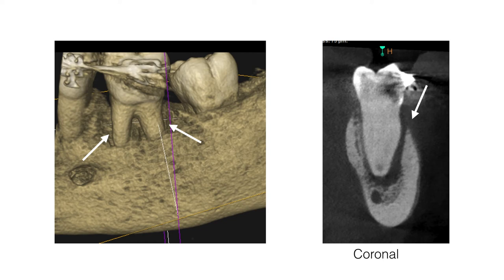A 3D reconstructed view and a coronal view of the CBCT scan clearly illustrated the loss of the buccal bone plate, exposing the coronal two-thirds of the mesial and distal roots. Despite the clinical and radiographic findings, it was decided to go ahead with treatment and to try and save this tooth.